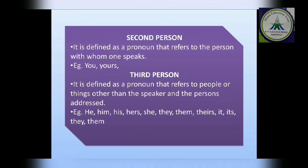Now third person — the third means the person we are talking about, who is not present in the conversation. It is defined as a pronoun that refers to people or things other than the speaker and the listener. The person other than the two of us is known as the third person. We identify the third person as: he, she, her, it, they. So we have three persons: first is the speaker, second is the receiver, and third is who is not present.